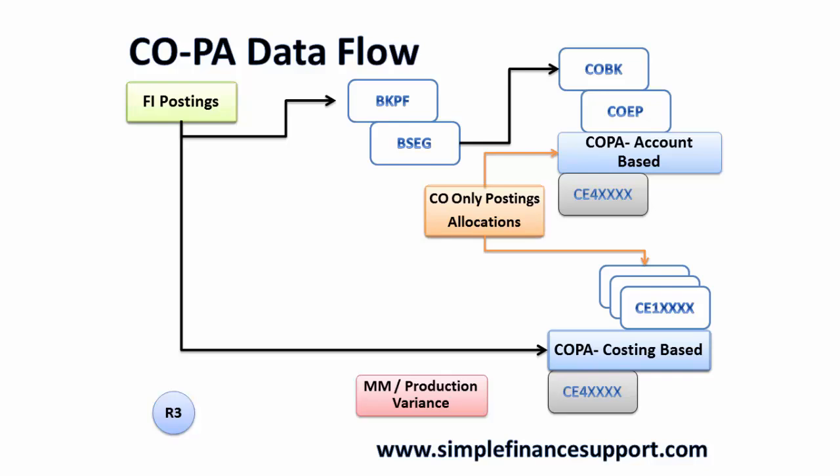For MM variances, the data posts into MKPF and then goes to the COPA tables — COEP and COBK — and then into the CE1 table for costing-based. An MM variance is a single value mapped to one COPA value field. For production variances you have different types: input variance, output variance, quantity variance, and usage variance. All these variances are mapped to different COPA value fields in costing-based, and they never go to COPA account-based.